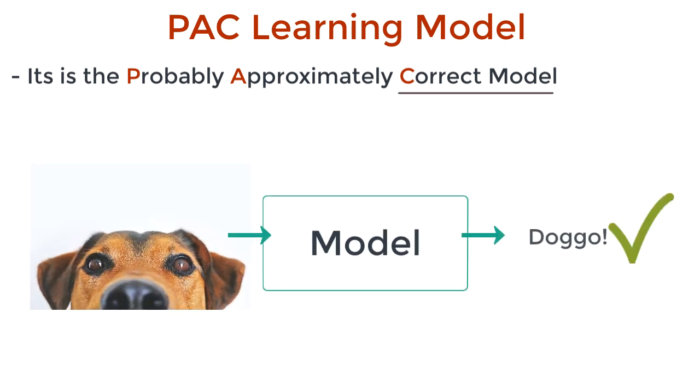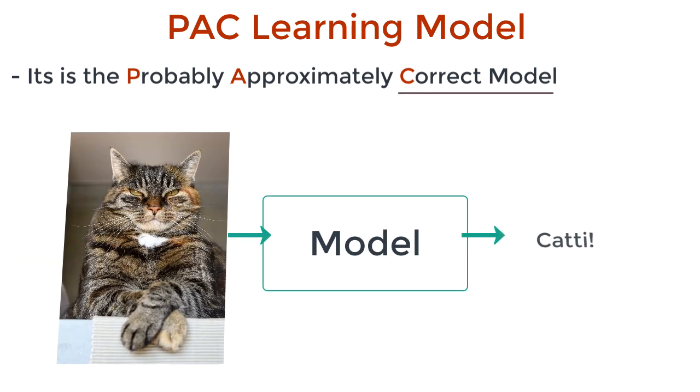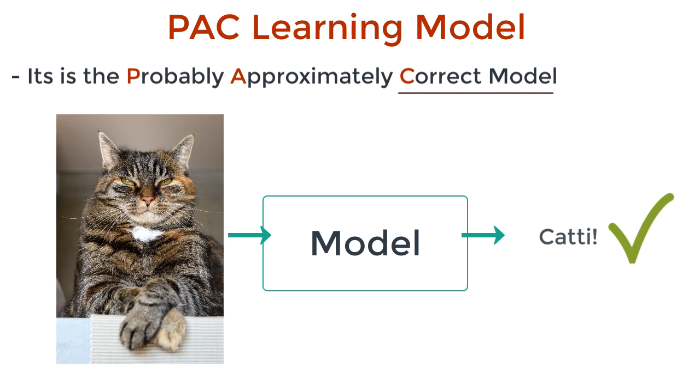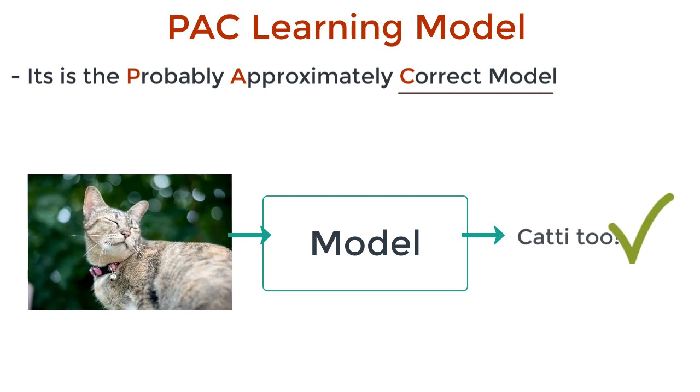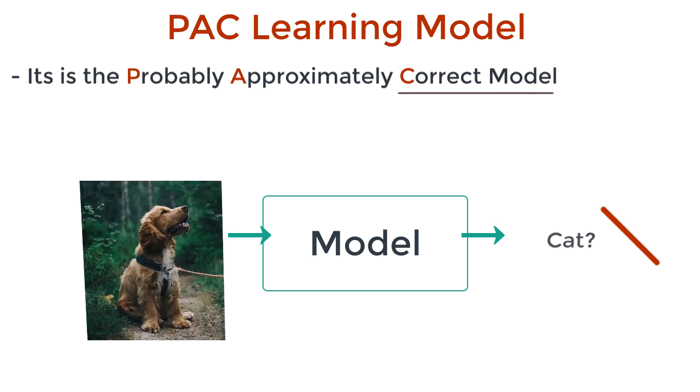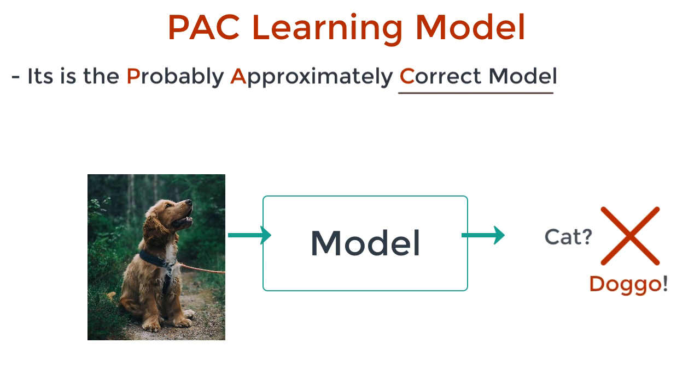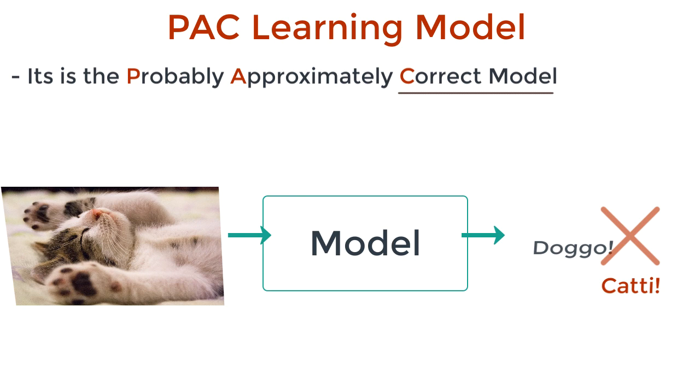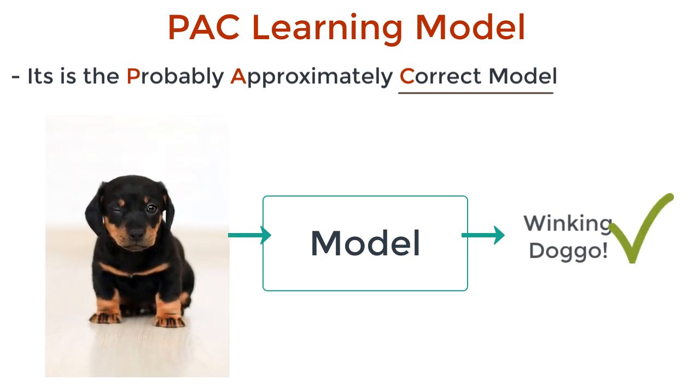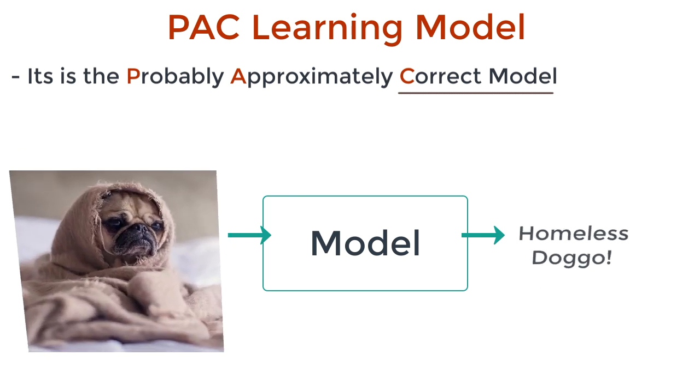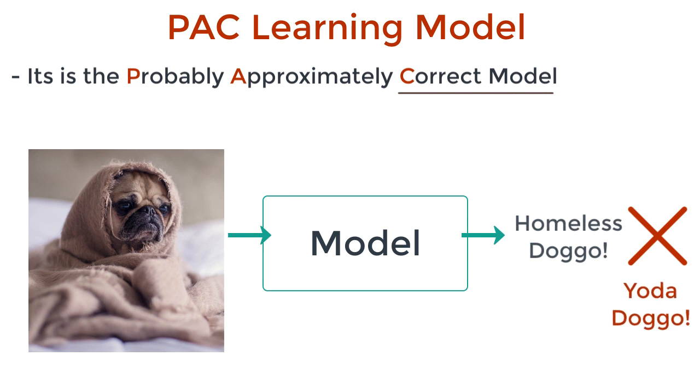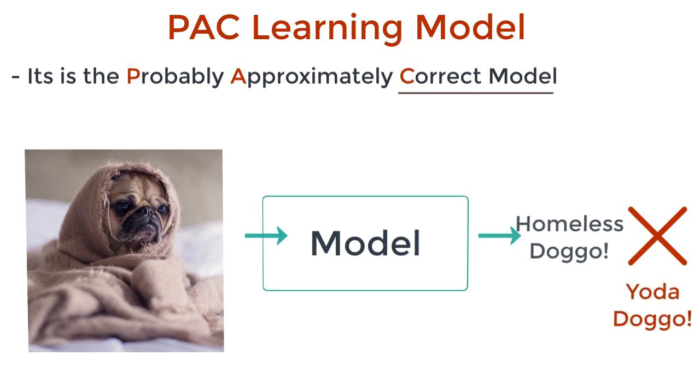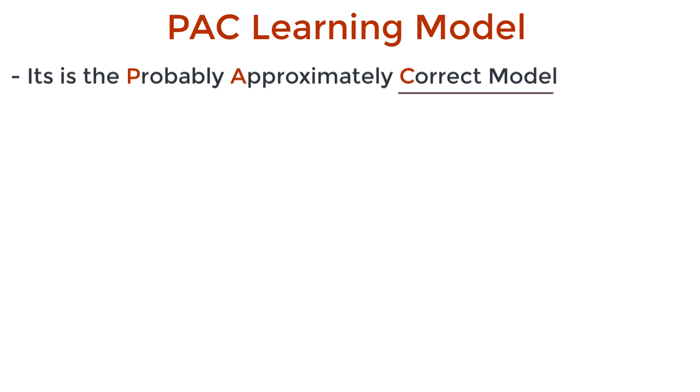We want a correct model, a model that always makes correct predictions on an unseen data set. And you can only get this by seeing every possible input combination. But if you do that, at that point, it's just memorization and not generalization, which is the point of machine learning. So there's no learning. Okay, so if we can't get a correct model, can we get an approximately correct model?